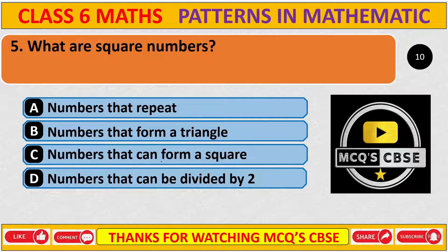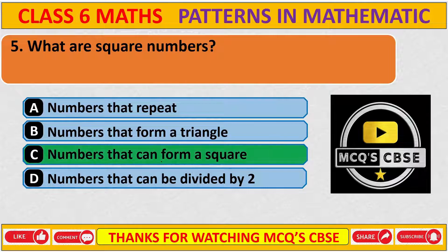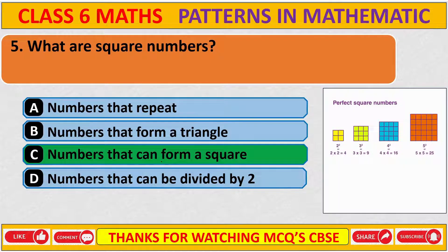What are square numbers? The correct answer is C: numbers that can form a square. For example, 2×2=4, 3×3=9, 4×4=16, and 5×5=25, and so on. These make a perfect square.